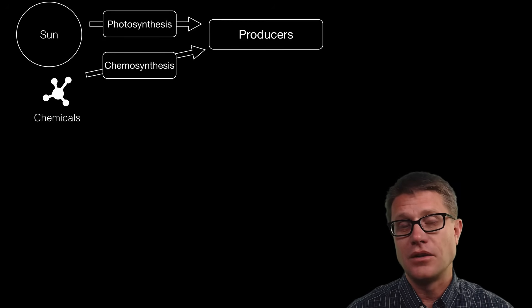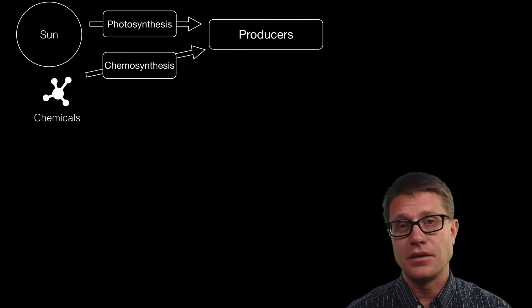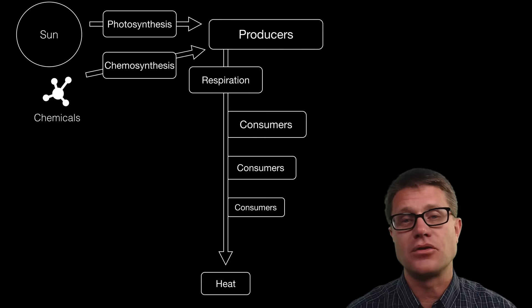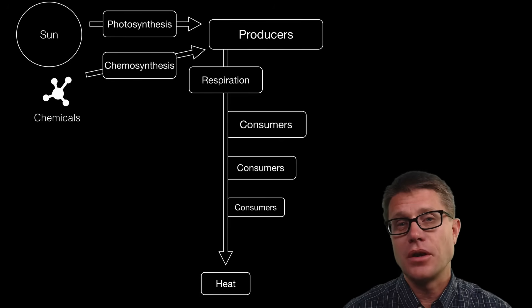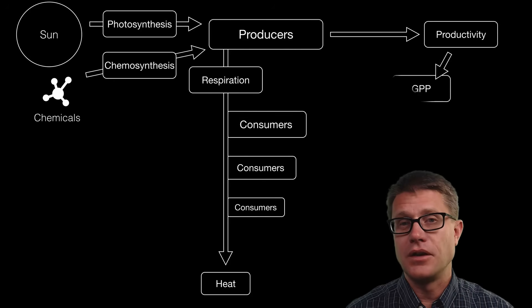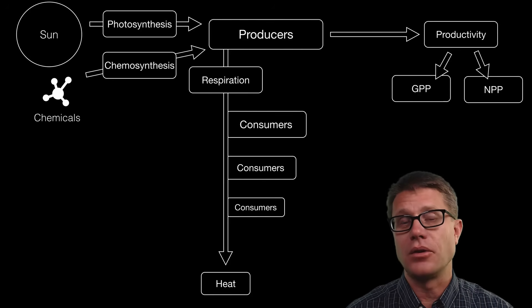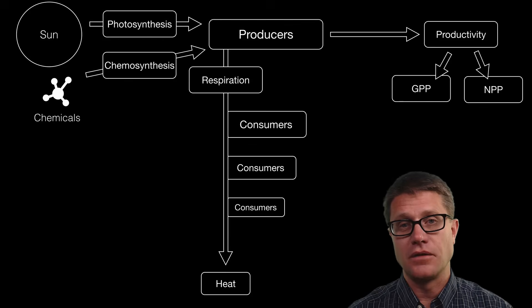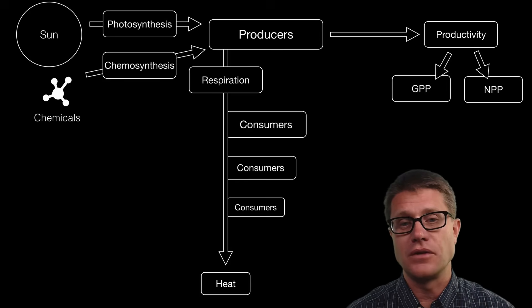Now once they have made that energy usable they can respire it. And so can all the consumers that sit above or below them on this trophic levels. Now we measure the amount of energy that is converted through productivity in one of two ways. Either gross primary productivity or net primary productivity. Gross is the overall amount of energy converted. And net is just how much the plant gets after it uses some of the energy for respiration.